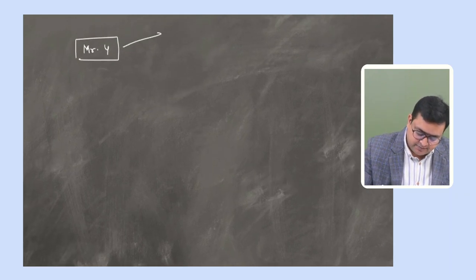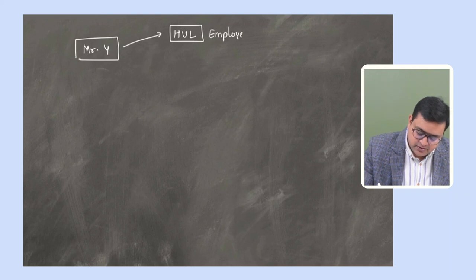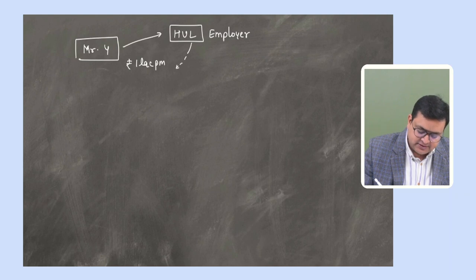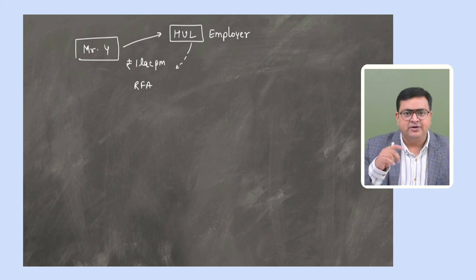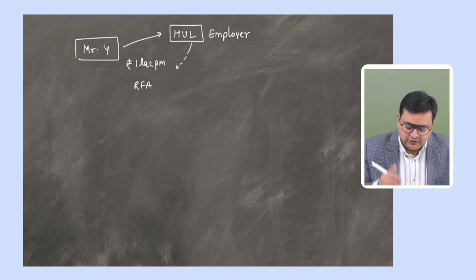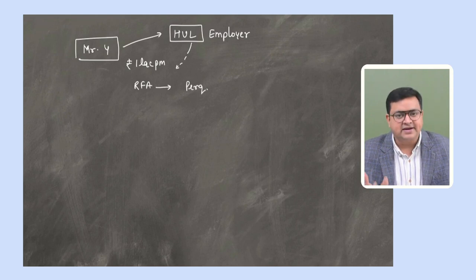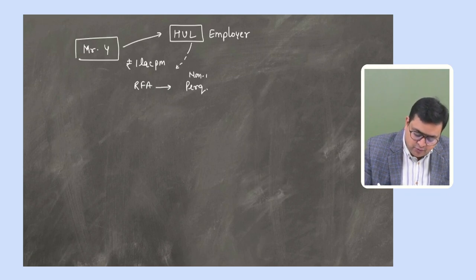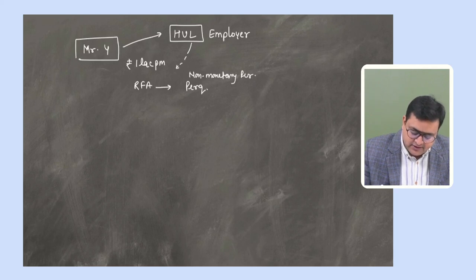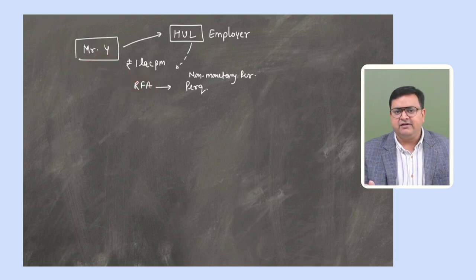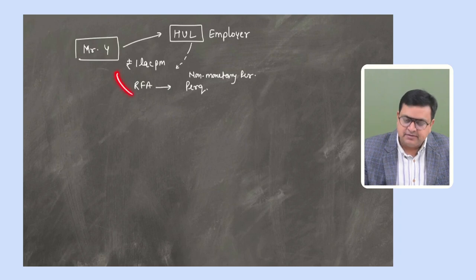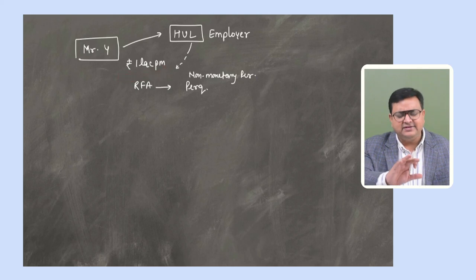Now let's understand tax on non-monetary perquisite paid by the employer. Suppose Mr. Y works with HUL and gets a basic salary of Rs. 1 lakh per month (Rs. 12 lakh per year) plus rent-free accommodation with a perquisite value of Rs. 1.2 lakh. So the gross salary is Rs. 13.2 lakh. After standard deduction of Rs. 50,000, the salary income and GTI become Rs. 12.7 lakh.